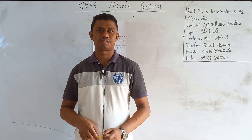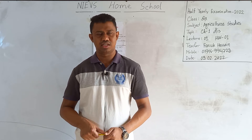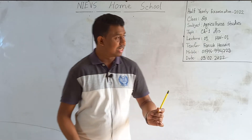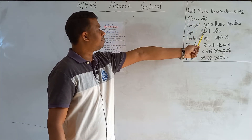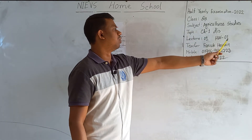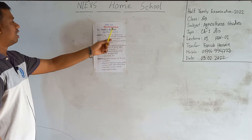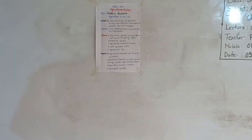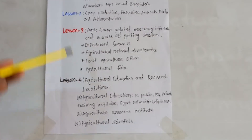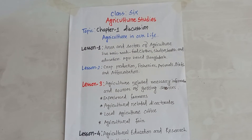Dear students, now I am going to conduct an Agricultural Studies class for the students of class 6, and this is your first class. Today we will learn about chapter 1 and its discussion, and you also have a homework. I have summarized the whole lesson here, and I will tell you the summary. You just have an overview on this sheet and hopefully you will be able to understand what is written in your textbook.